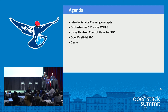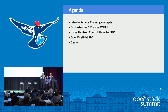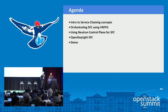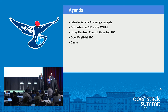On the agenda today, we will quickly go through some of the basic service chaining concepts, then look into the TOSCA data model and how we can use it to describe SFC constructs. We'll use the TOSCA template to onboard and deploy a forwarding graph using Tacker as the NFV orchestrator. Louis will talk about Neutron Networking SFC, Brady will cover Open Daylight SFC and the IETF SFC information, and finally we'll wrap with a demo and Q&A.